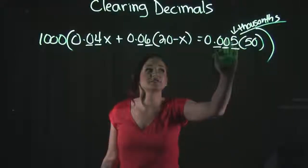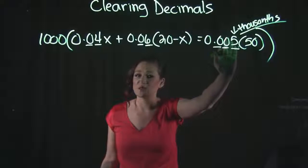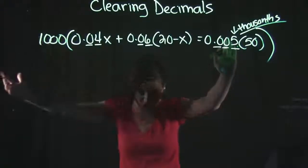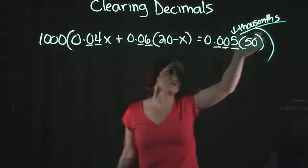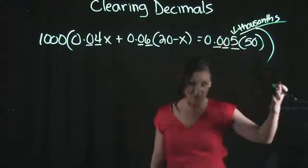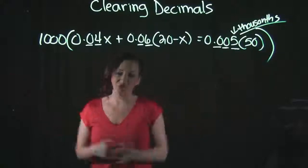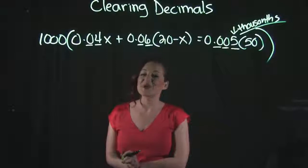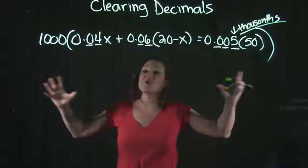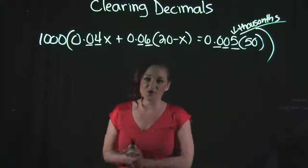Had I only had two decimal place values, that's the hundredths, I would have multiplied by a hundred. If I had five decimal place values, that would have been a hundred thousand, so I would have multiplied by a hundred thousand, and so on. So the most number of decimal place values, whatever that value is, is what you multiply the entire equation by.